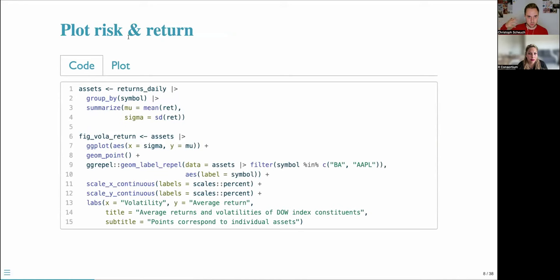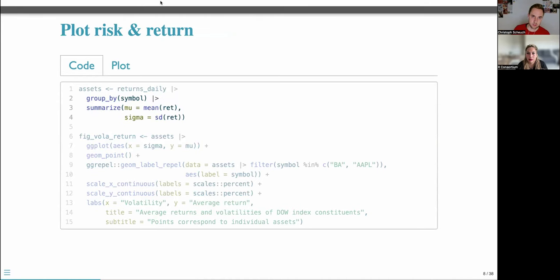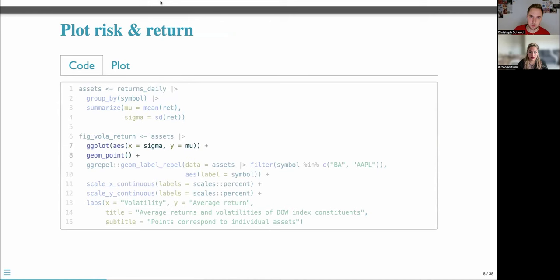We also plot risk and return measures. For each symbol, we calculate the expected return mu, which is just the mean of historical daily returns, and sigma, which is the standard deviation of those individual returns.